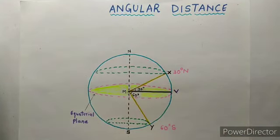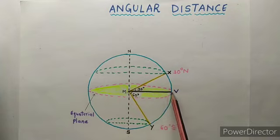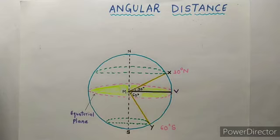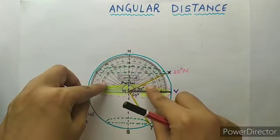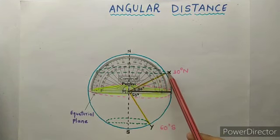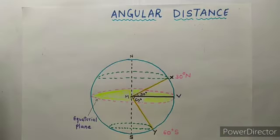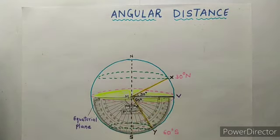After drawing a circle with the help of a compass you will get a center point. From this center point, draw a line which touches the surface of the earth. After that, place a protractor on the center of the earth. Now mark an angle of 30 degrees. Then place the protractor to the other side of the circle and mark an angle of 60 degrees.